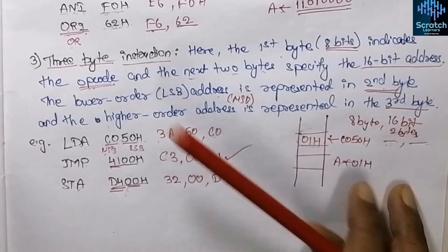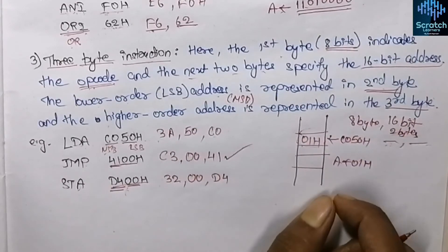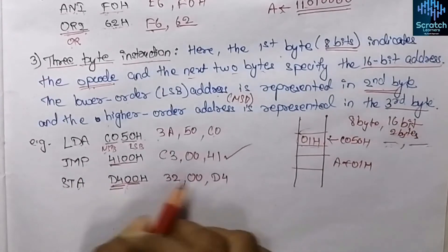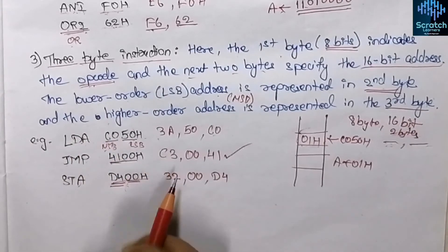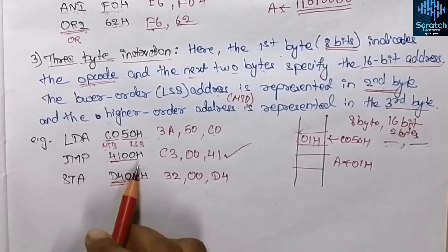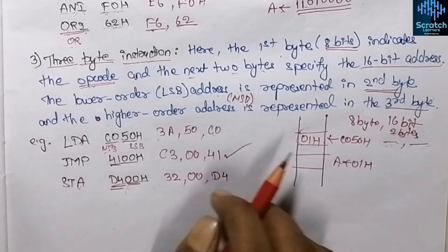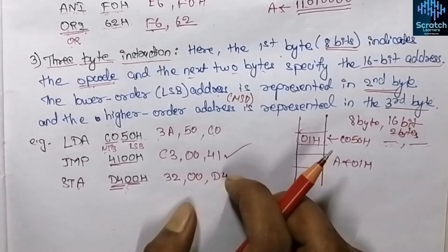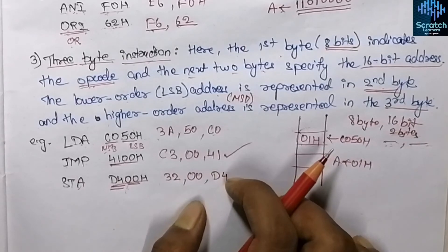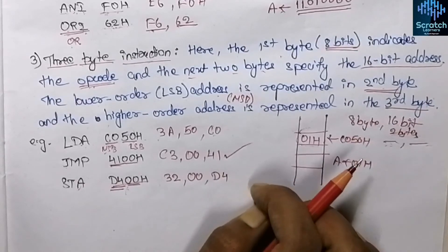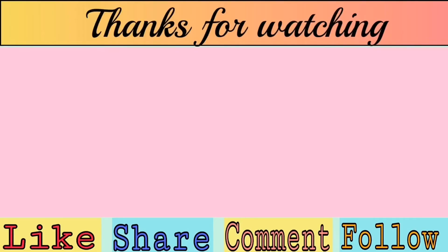That was all about the instruction sets in 8085 classified by word size. If you have any doubts, please ask in the comment section. We will discuss the implementations of these instructions and all assembly language programs of the 8085 microprocessor in the next video — see you there, thank you.